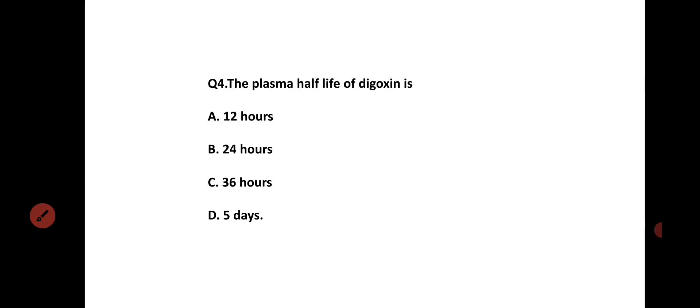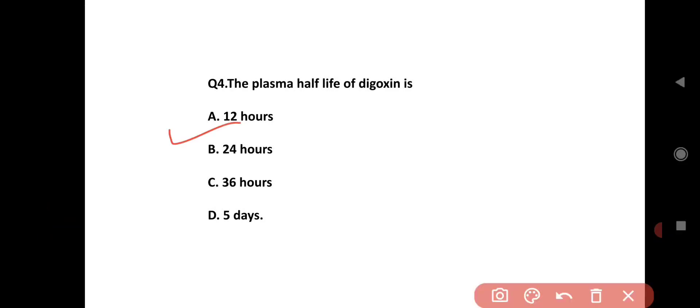The plasma half-life of digoxin: Option A is 8 hours, Option B is 12 hours, Option C is 70 hours, Option D is 5 days. The correct answer is Option C, 70 hours.